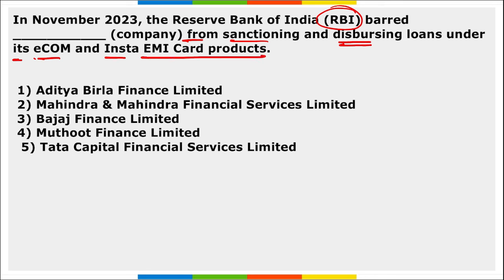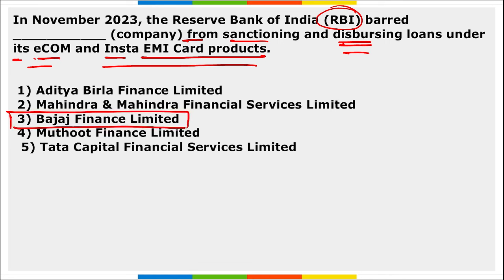Next: RBI barred which company from sanctioning and disbursing loans under its ecom and Insta EMI card products? It is Bajaj Finance Limited — barred with immediate effect.